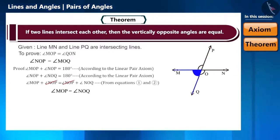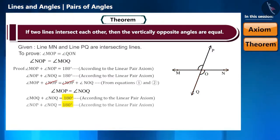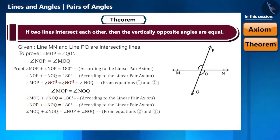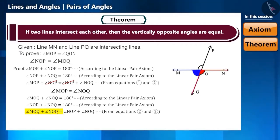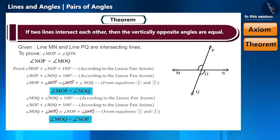And similarly, we can also prove angle MOQ is equal to angle NOP. Keeping the ray OQ in mind, can we say that angle MOQ plus angle NOQ equals 180 degrees? Yes, according to the linear pair axiom. Similarly, taking ON as the ray, angle NOP plus angle NOQ equals 180 degrees. If we pay attention to both equations, the right-hand side is equal, so the left-hand side will also be equal. That is, angle MOQ plus angle NOQ equals angle NOP plus angle NOQ. Since angle NOQ is the same on both sides, on cancelling it from both sides, we get angle MOQ equal to angle NOP. So friends, in this way we proved that the vertically opposite angles formed by the intersection of two lines are equal.